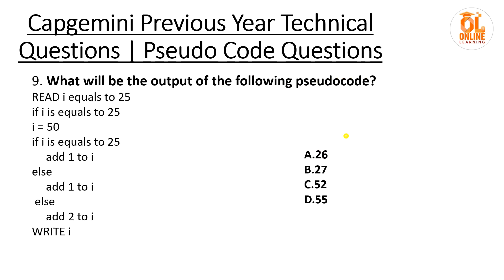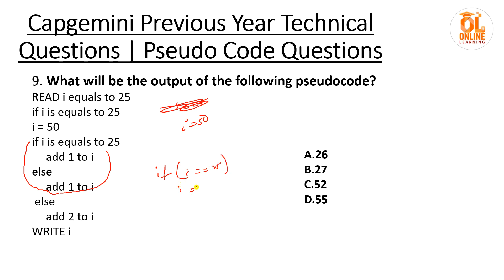Question 9: i equals 25. If i == 25, yes — so i equals 50. Now if i == 25 again — no, i is 50 — so else part: add 2 to i, meaning 50 plus 2 equals 52. So i equals 52 — option C is the correct answer.